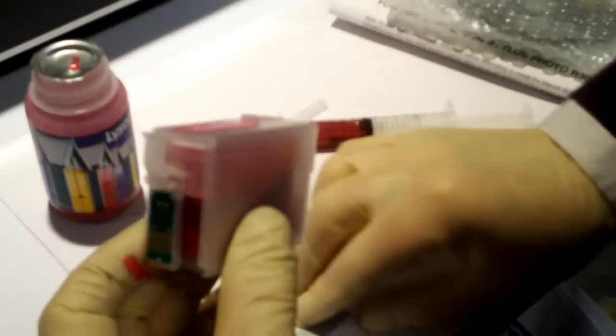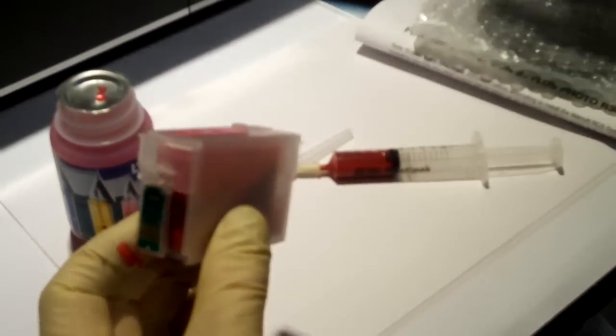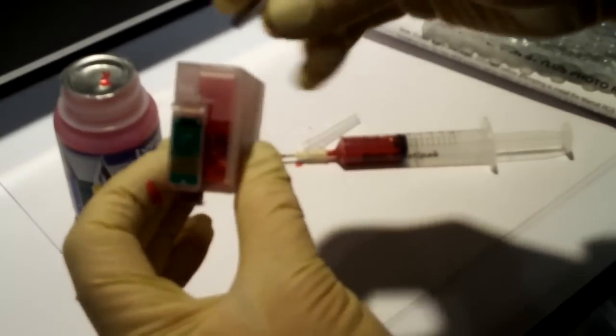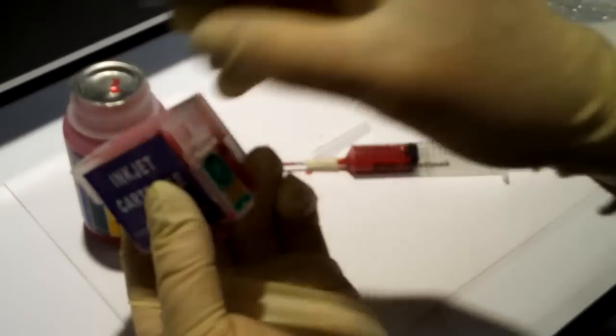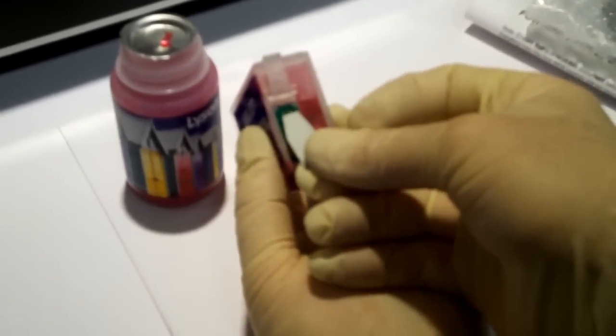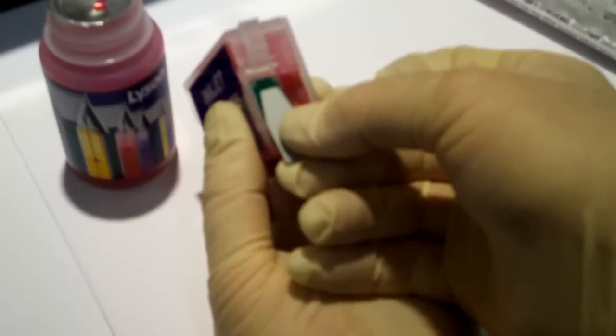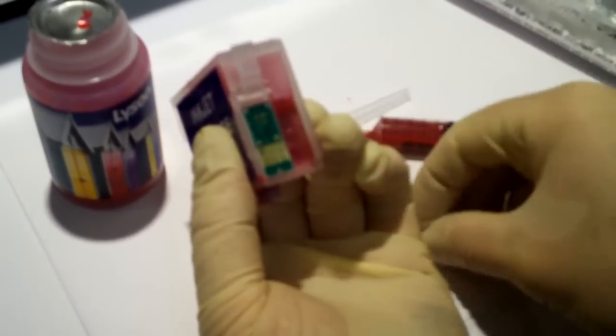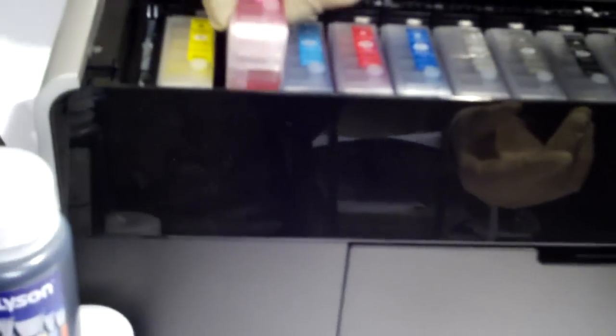what you do is you take the little tab, this tab that you'll find in with the kit, and you, let's see if we can arrange this so you can see what I'm doing, and you actually short out those two little contacts for about 10 seconds, and that's enough to short out the contacts, that's now reset that chip, and you can now put the cartridge back in the printer.